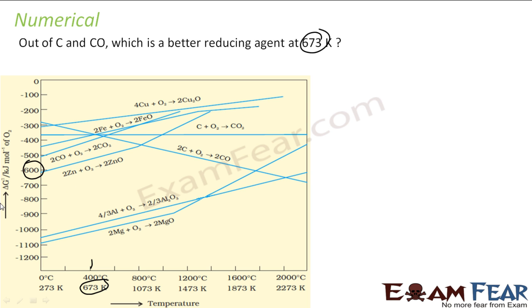Let's see where carbon lies. C plus O2 gives CO - this equation is in this line. The other one, CO plus O2 equals CO2 - that's this line. If you see at 673 Kelvin, CO is in the lower range.